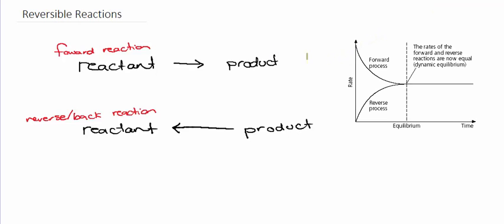If we consider what happens in terms of the rate of the forward and reverse reactions to start with — initially we have a higher concentration of our reactants and therefore a faster rate. So the reactants are being converted to products at a relatively fast rate. As that reaction proceeds, the concentration of the reactants decreases and therefore the rate of that forward reaction decreases. We can see that by the gradient of that curve when we're looking at the rate over time.